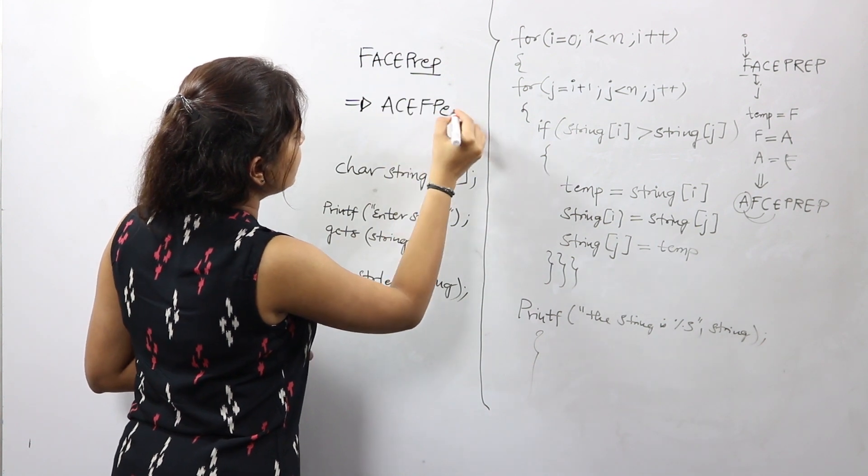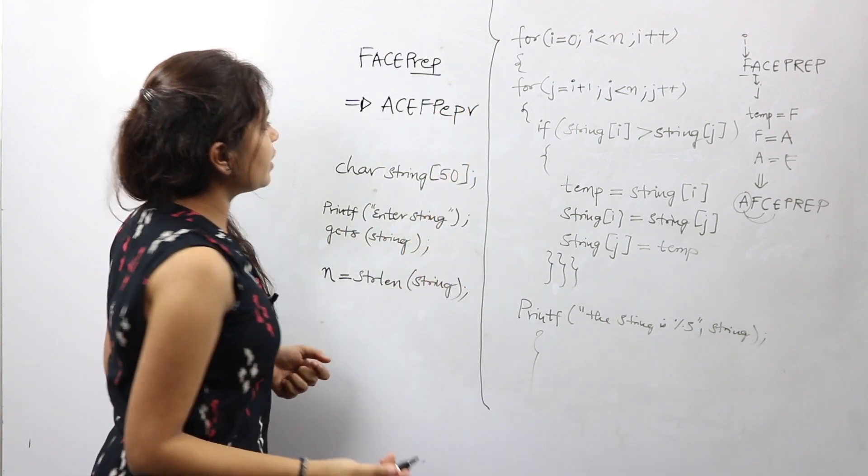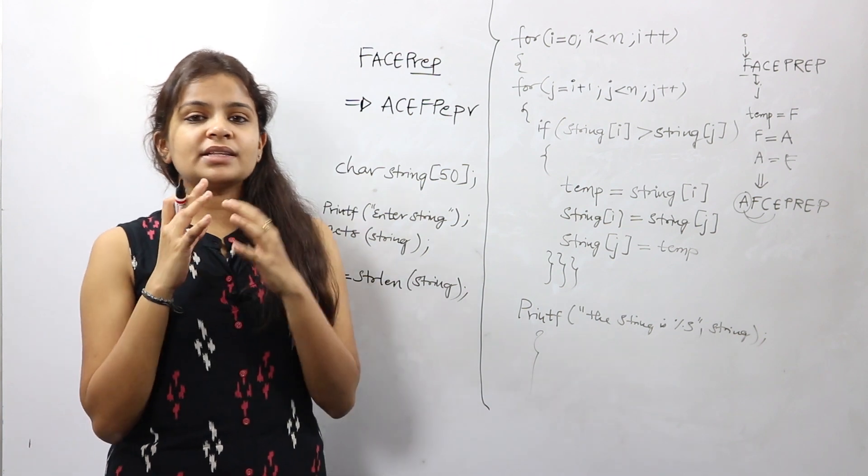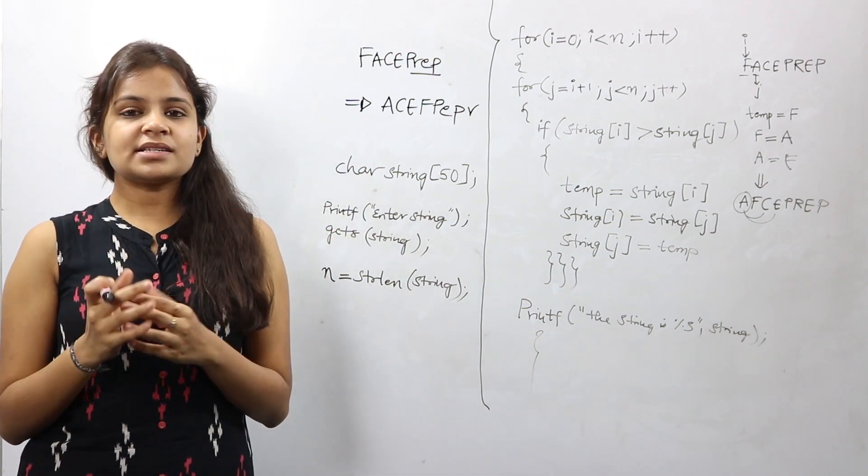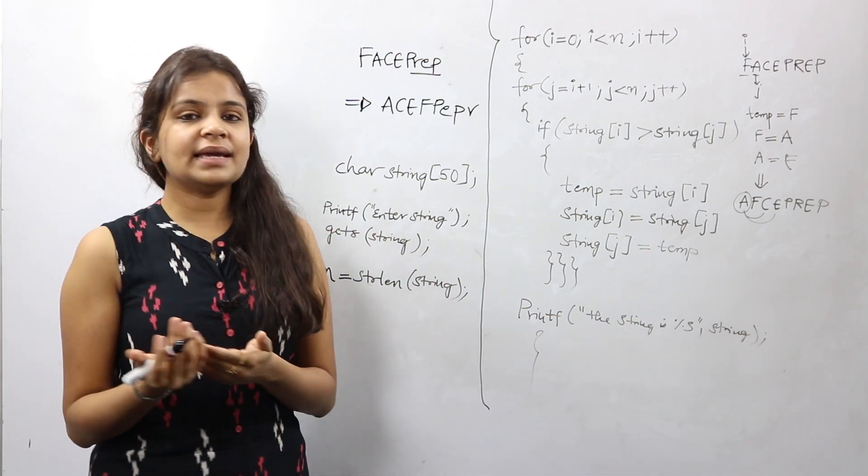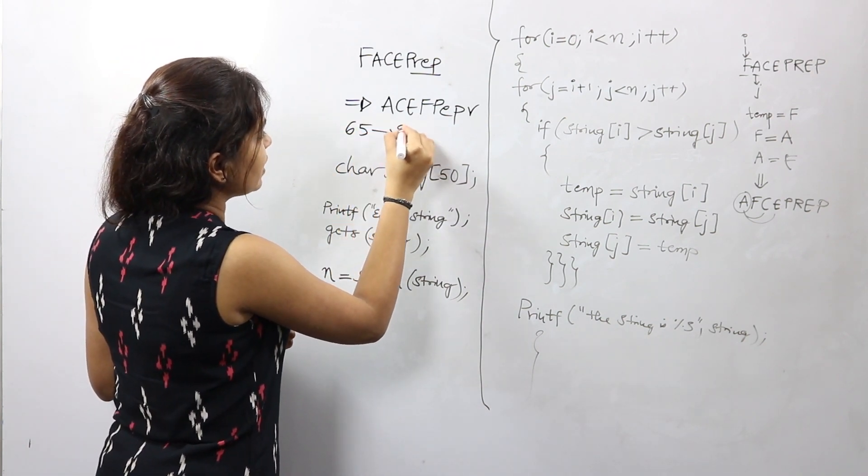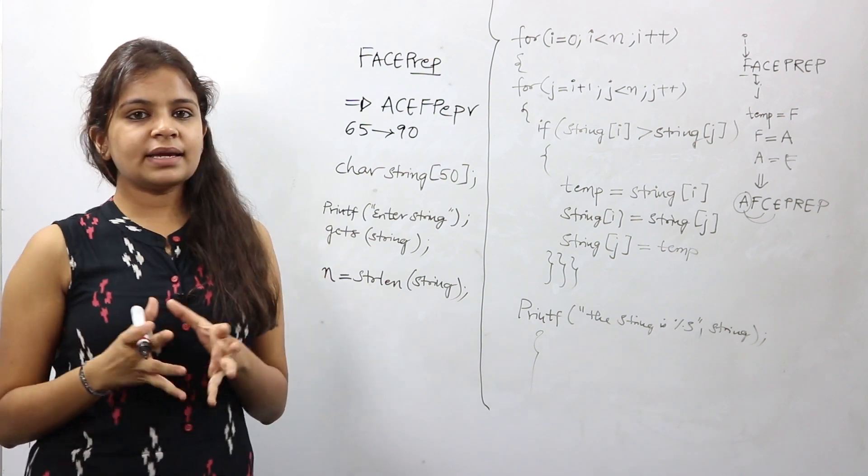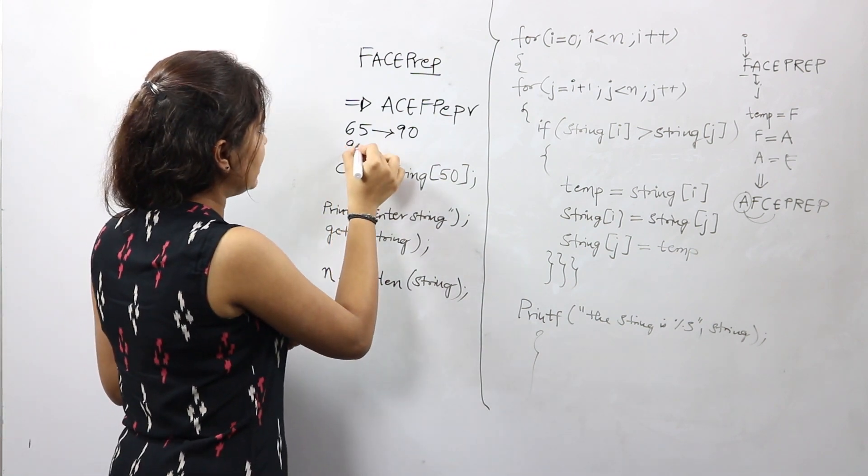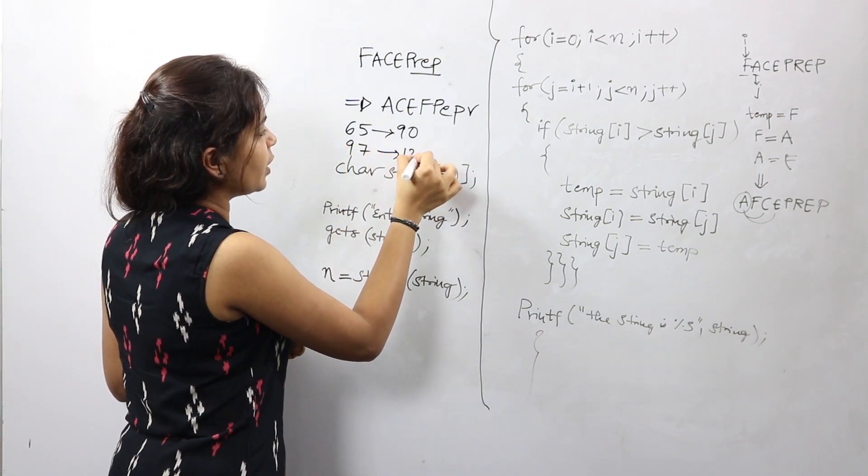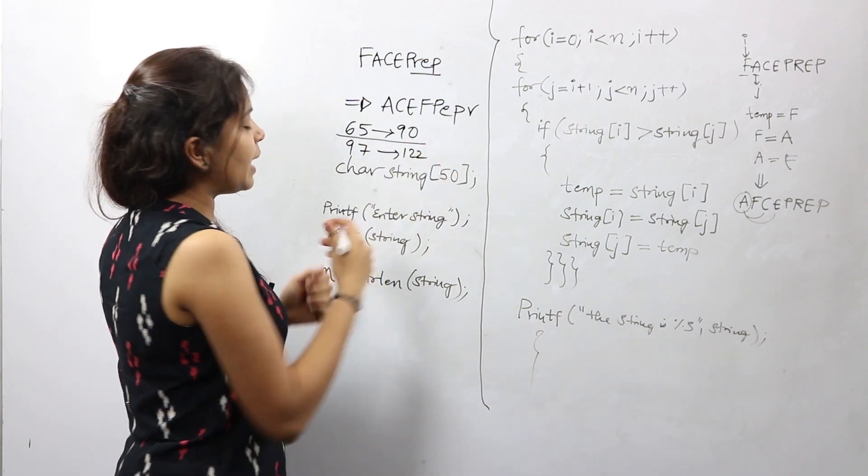That's purely because the ASCII values of uppercase letters start from 65 and end at 90, whereas for lowercase letters it starts from 97 and ends at 122. So obviously uppercase letters are considered to be smaller ones when compared to lowercase letters.